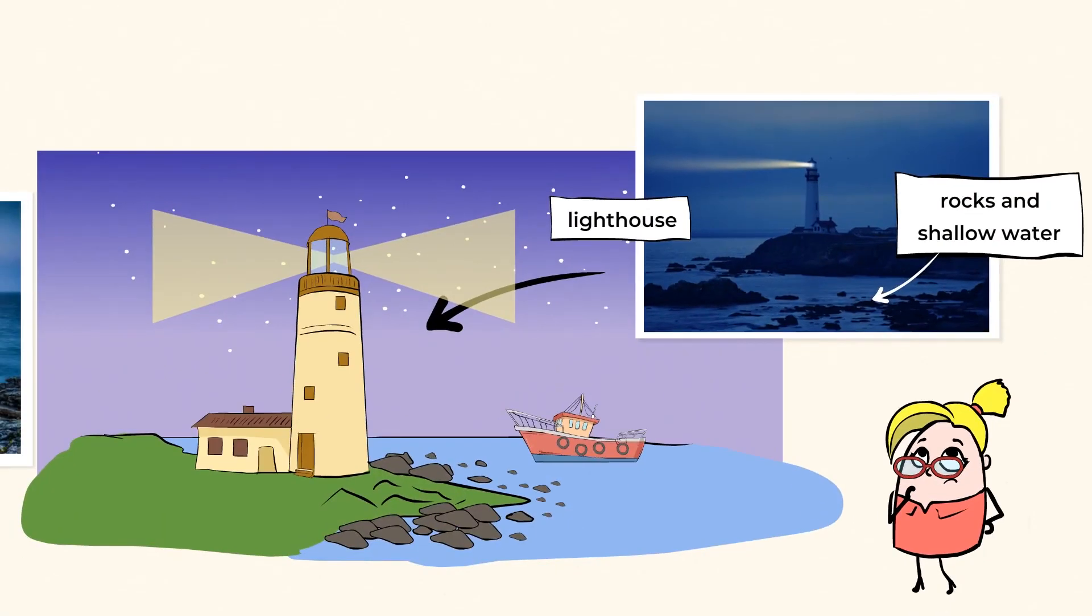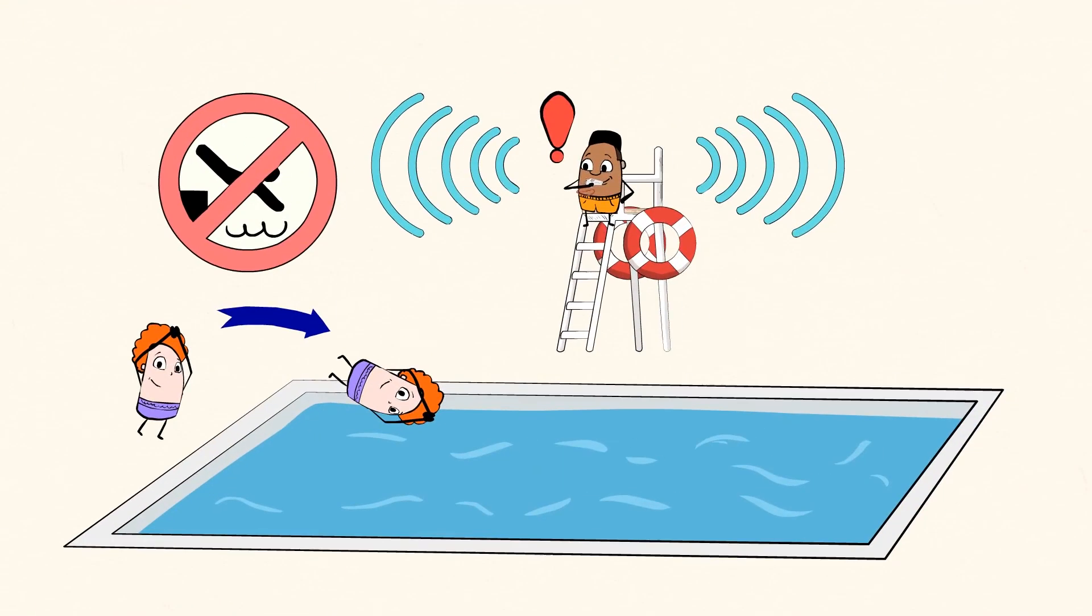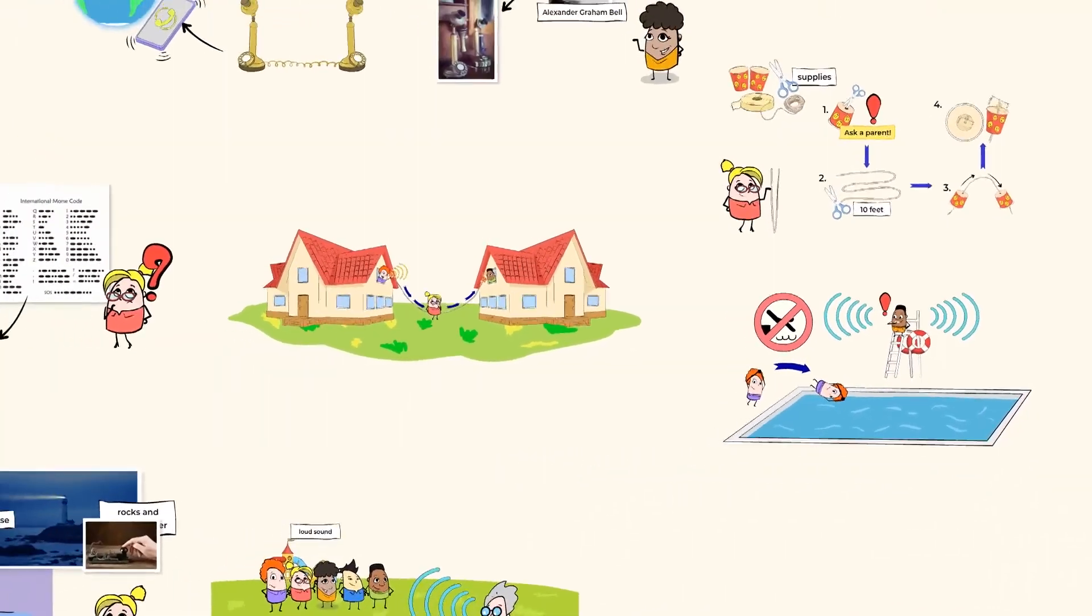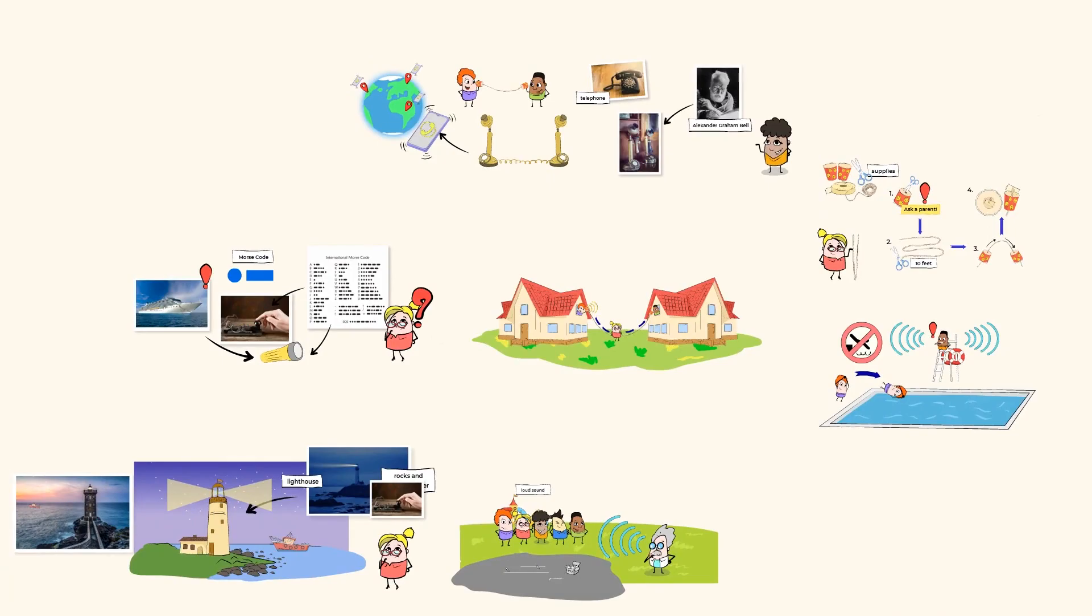Ships rely on lighthouses and messages sent in Morse code to stay safe. You might even hear a whistle at the pool or at school, sending you a message from afar. So go on, mighty scholars. Think about a new way of communicating and try it out with your friends. Until next time!